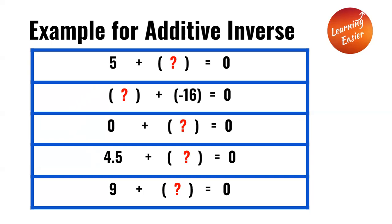4.5 plus a number equals zero. The additive inverse of 4.5 is negative 4.5, so the answer is negative 4.5. 4.5 plus negative 4.5 equals zero.